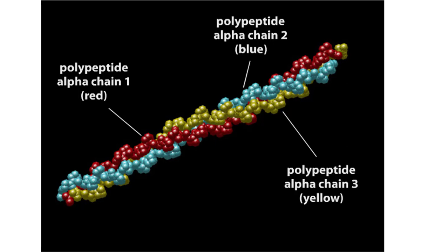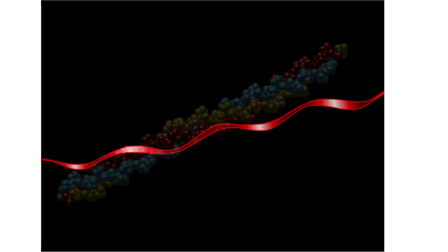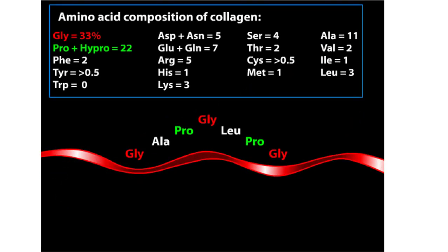A collagen helix forms largely from the influences of two types of amino acids: proline, which introduces sharp twists in the polypeptide, and glycine, which has a small side chain consisting of hydrogen that doesn't interfere with packing in the helix. Collagen contains many of these amino acids, but few bulky ones — for example, phenylalanine.